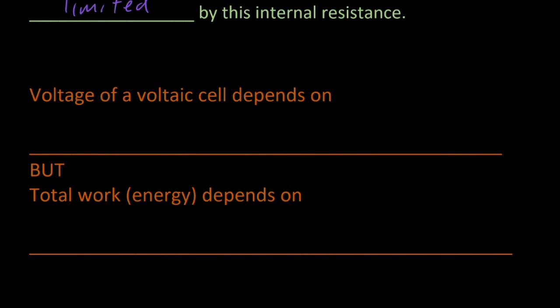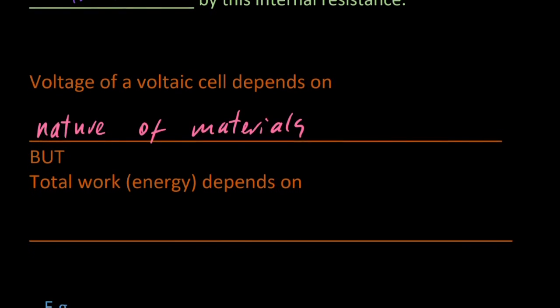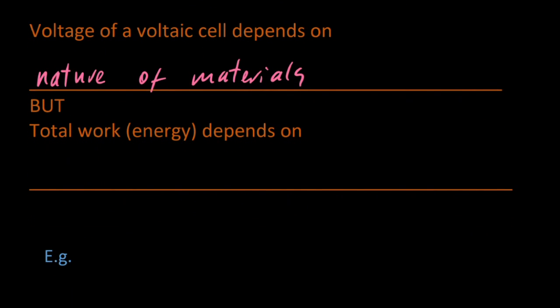The voltage of a voltaic cell depends on the nature of the materials—is it carbon, copper, zinc? But the total work or total energy that you can get out of the cell depends on the quantity, the amount of the materials.